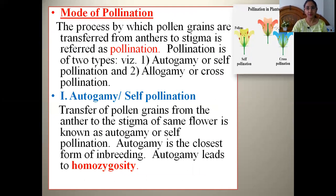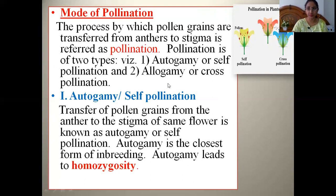Now we will go into the modes of pollination. Pollination is the process by which the pollen grains are transferred from anthers to stigmas. It can be of two types: autogamy or self-pollination, and allogamy or cross-pollination. The transfer of pollen grains from the anthers to the stigma of the same flower is autogamy. Autogamy is the closest form of inbreeding, because there is no heterozygosity involved.